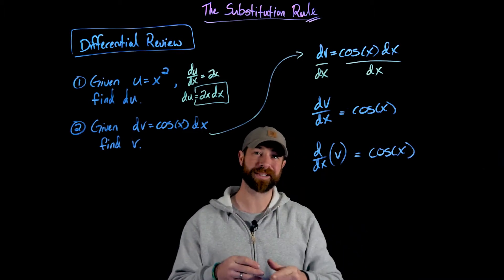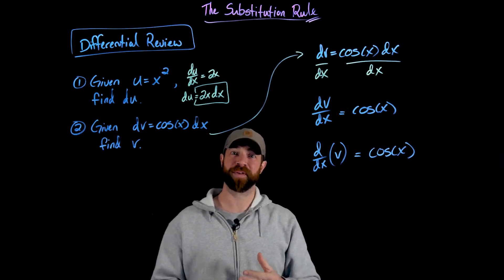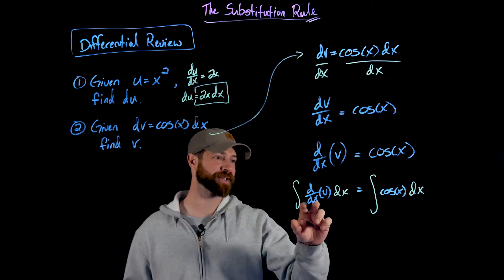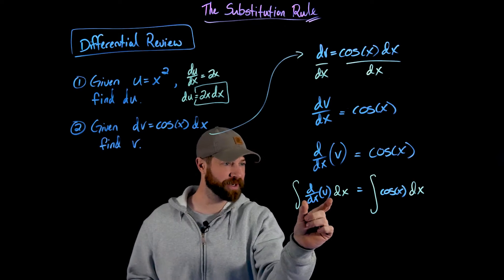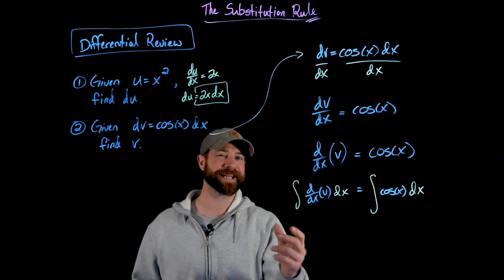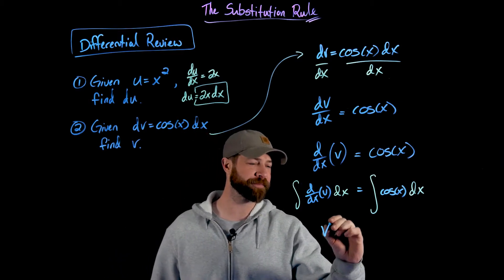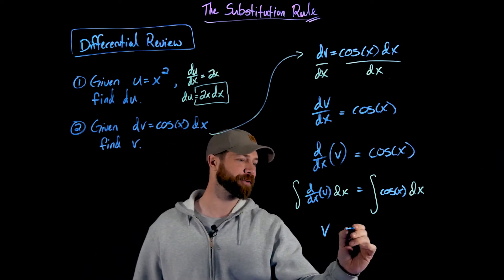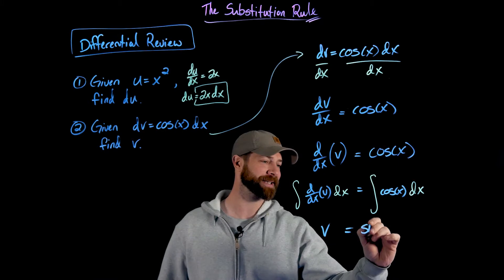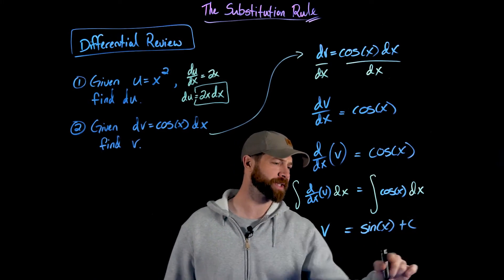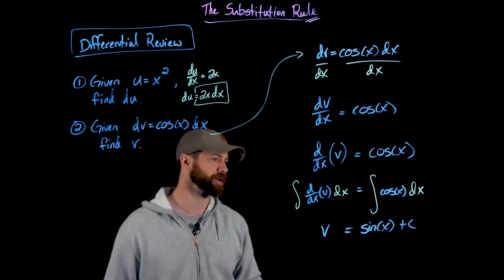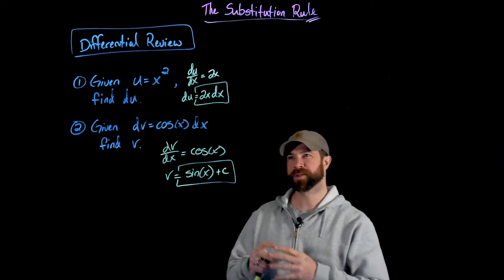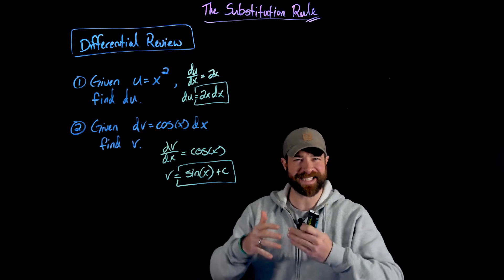I can rethink of this as the operation of the derivative with respect to x on v equals cosine of x. Applying the integral with respect to x of both sides, the indefinite integral will cancel this derivative — that's a consequence of the fundamental theorem of calculus. The anti-derivative of the derivative is just the original function. And when I anti-differentiate cosine of x, I get sine of x plus c.